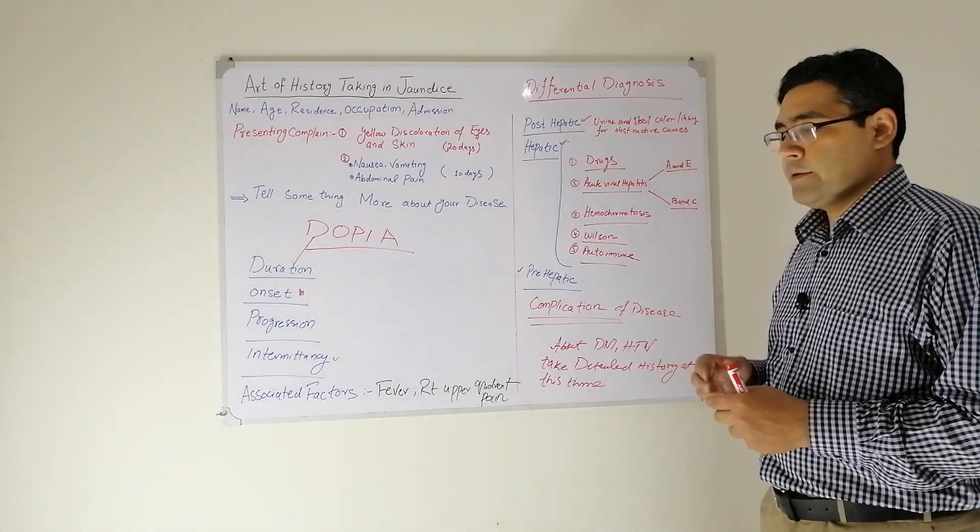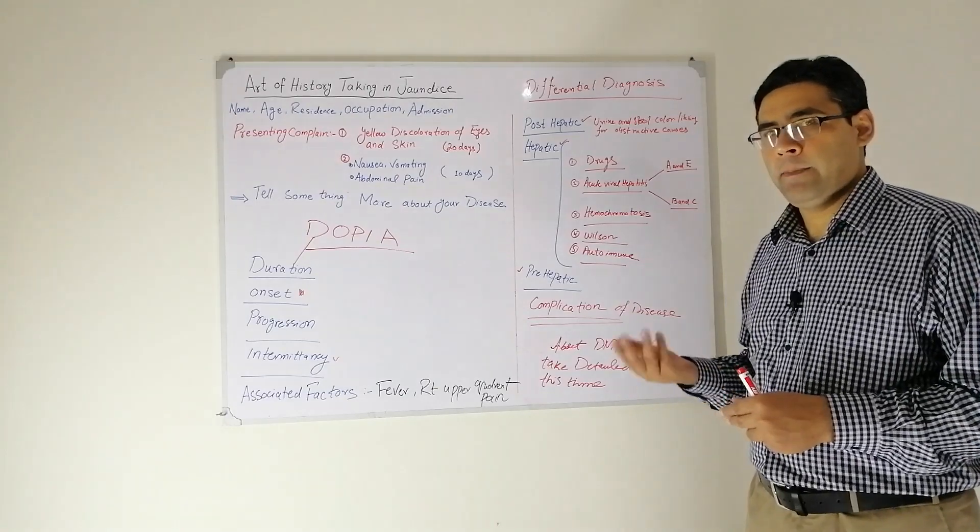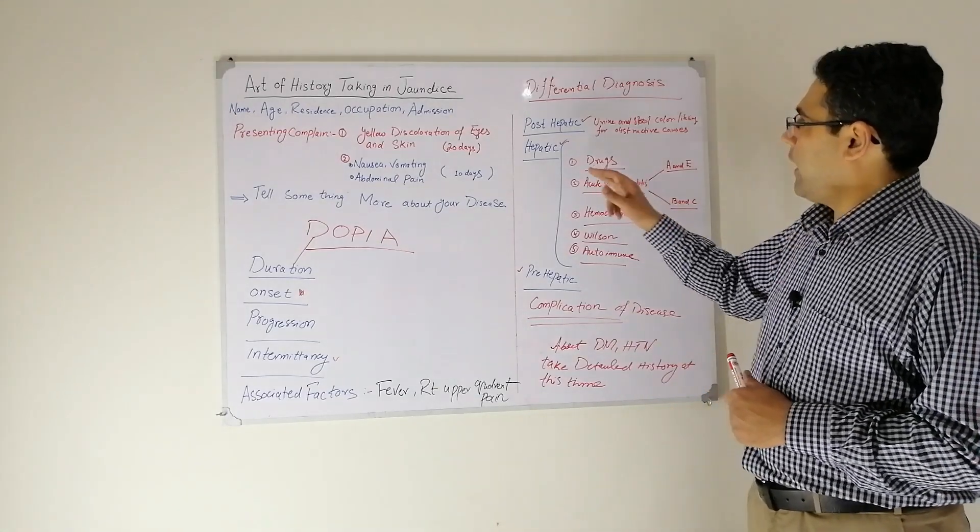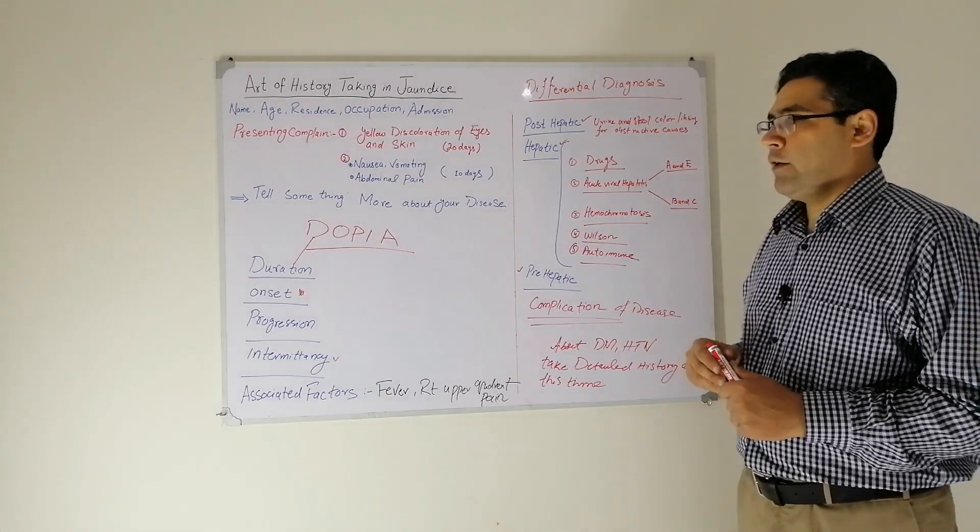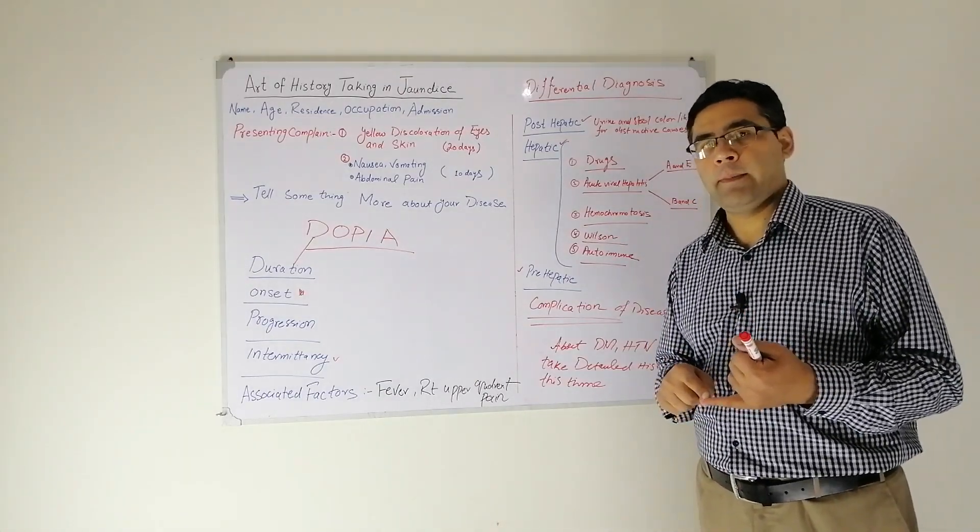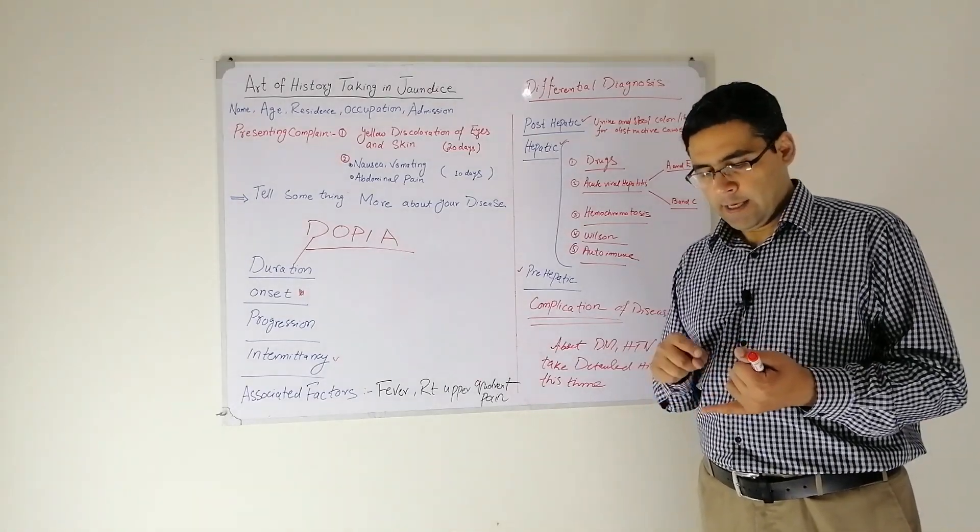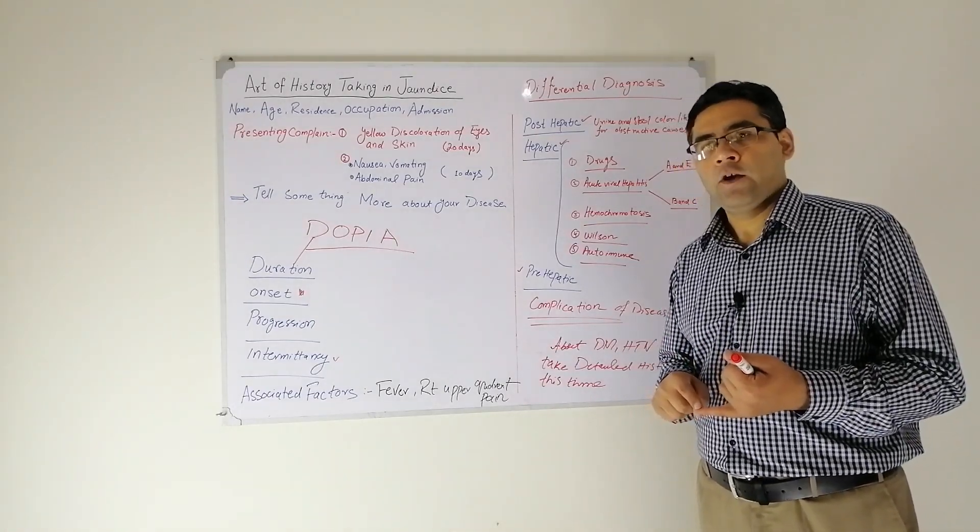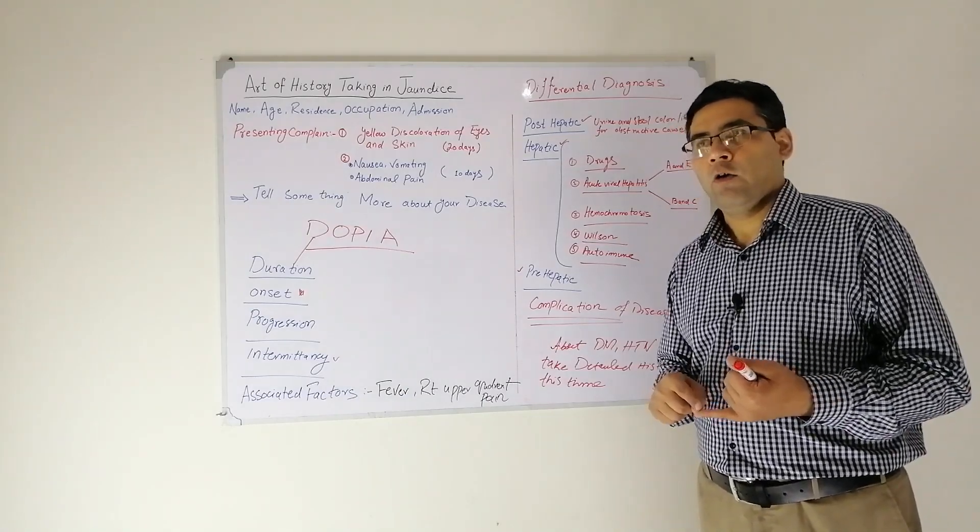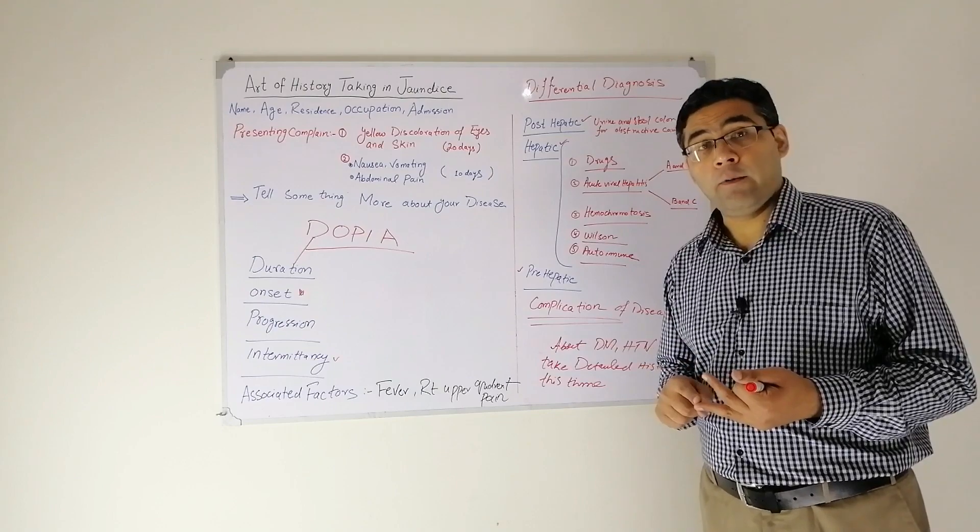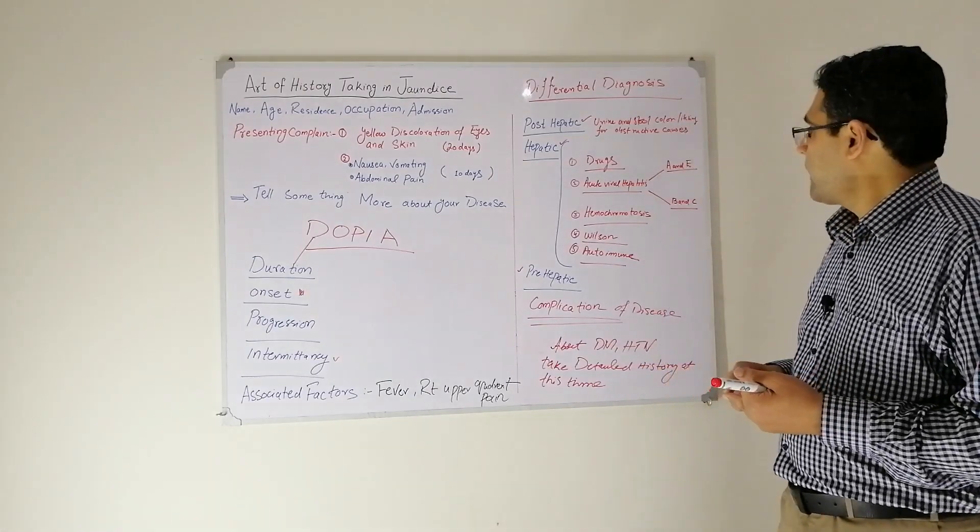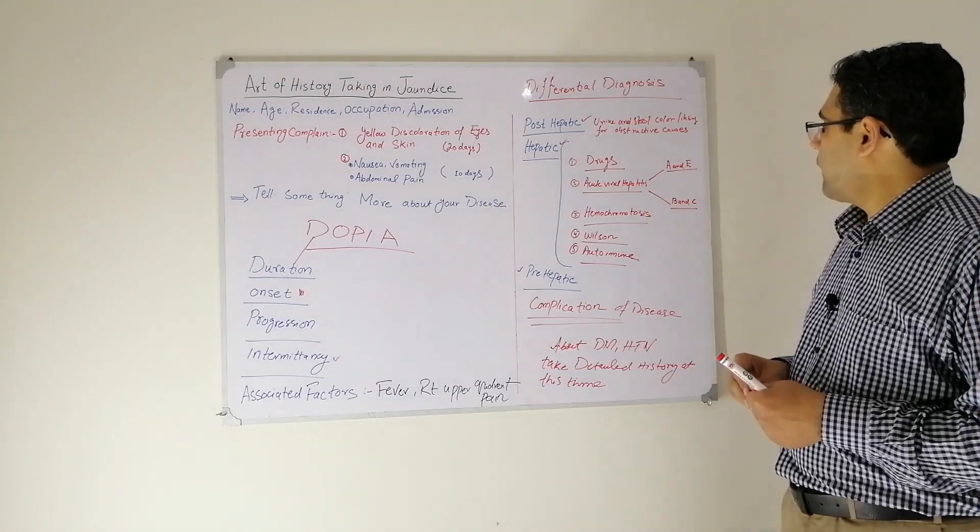Then comes the hepatic causes. Ask if there is any history of use of any medication before the development of jaundice. The patient may have used some drugs like paracetamol, or you will also inquire about herbal and hakim medications.